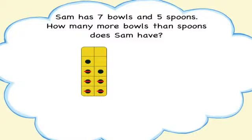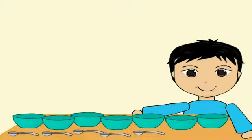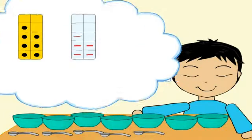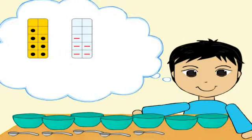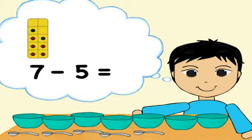Now children can match one to one and see which bowls have no spoon. So there are two more bowls than spoons. With this model, children see that they can take away one bowl for each spoon. Seven bowls in all, take away five bowls with spoons, leaves two bowls. Seven take away five is two.